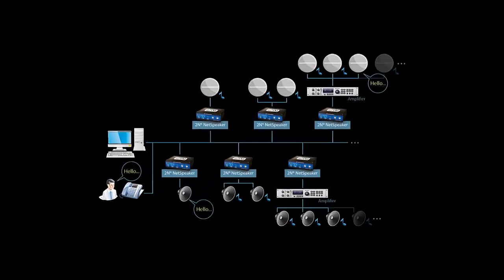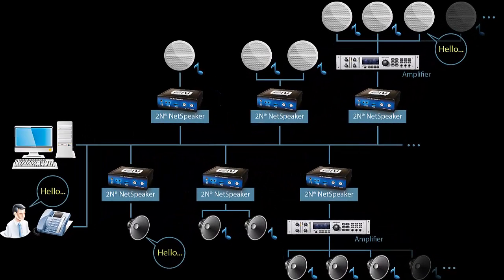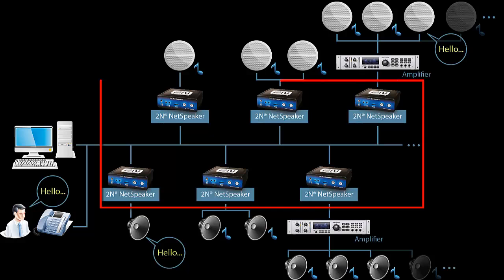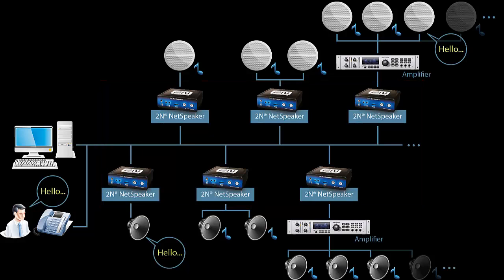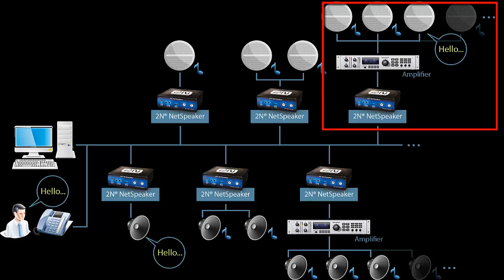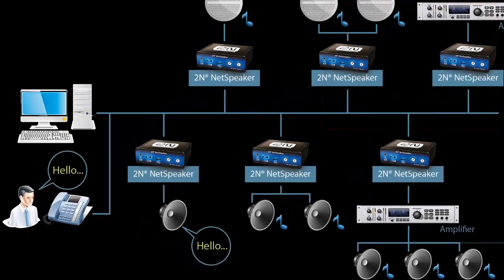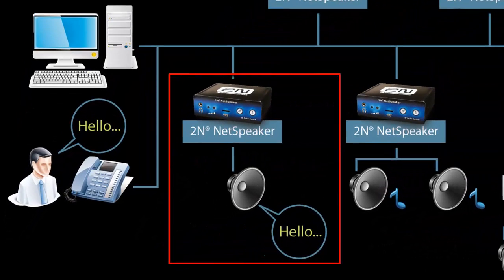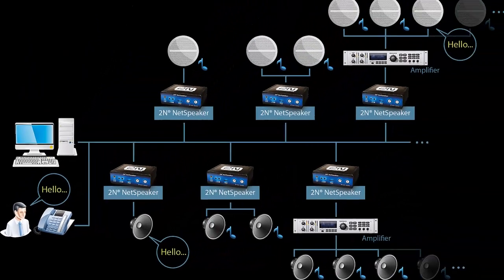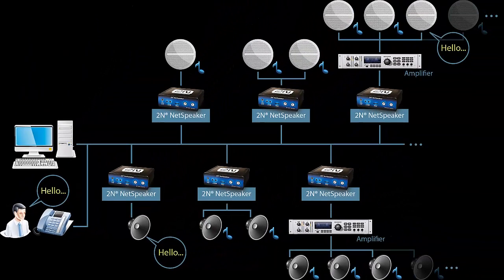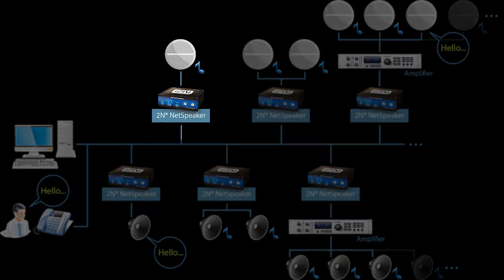IP audio devices are connected to the network and you can stream to all of them at once or just in one defined zone, which could represent the first floor in the building or a specific room. You can connect only one speaker to the unit — in this case, we are talking about installation for the ceiling speaker.